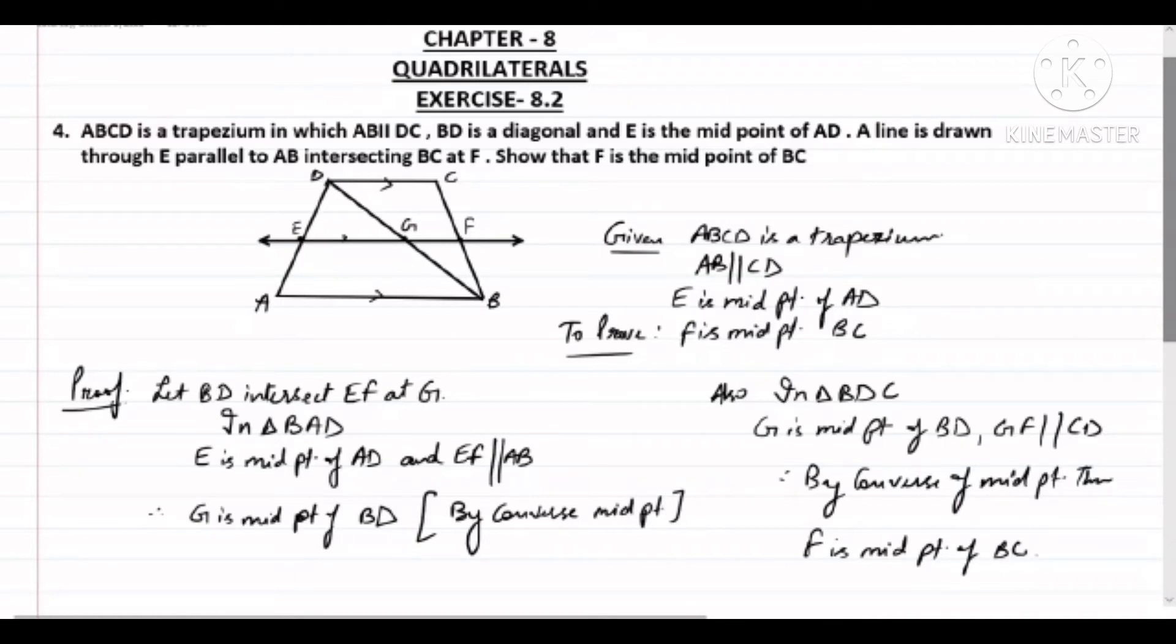Let me explain once more. First, in triangle BAD, taking E as midpoint and EG parallel to AB, I proved G is the midpoint. After that, in triangle BDC, taking G as midpoint and GF parallel, I showed F is the midpoint by converse. This is what we needed to prove. Hence proved.